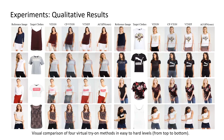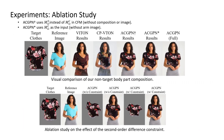Visual comparison of four virtual try-on methods in easy to hard difficulty levels. We can see the remarkable effect of non-target body part composition and the second-order difference constraint.